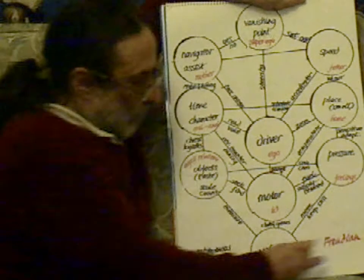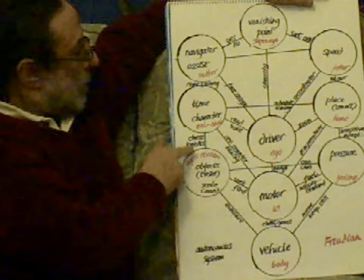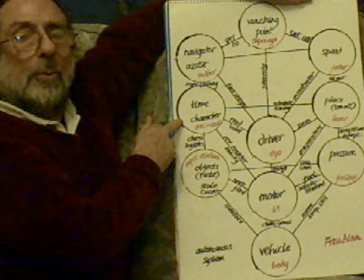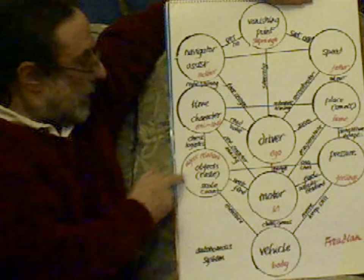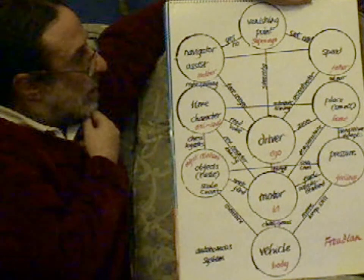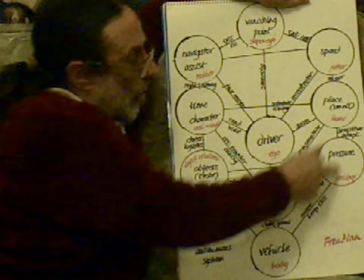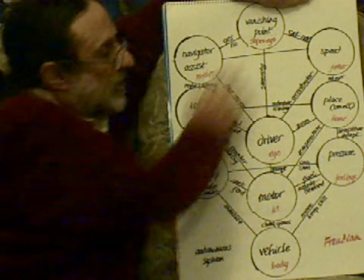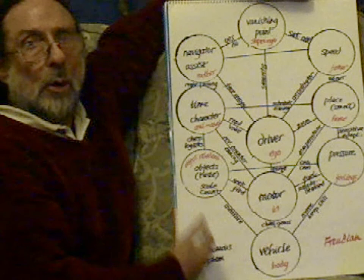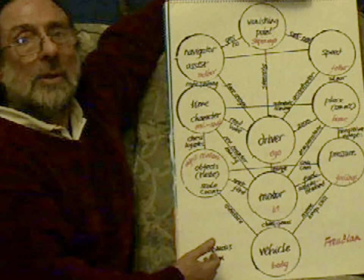So we have the Freudian model: we've got the body, the id, the ego, and then the superego. In the time, we've got the character — we've got the oral and anal characters from Freud. We've got the mother and father, our home, our place of birth, our feelings, the pressures. So all of this psychology of Freud can be related to an autonomous system, and by understanding both, we can understand ourselves and understand a robot that could copy us.